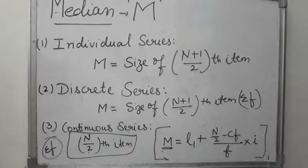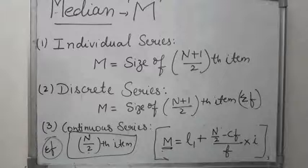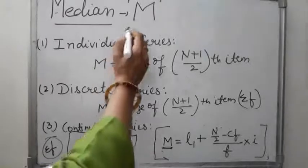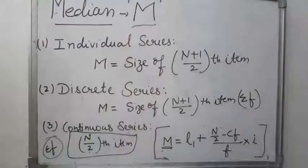Median means half of the values or items of the series are above it and the other half below it. So we can call it the mid value of the series. In statistics, median is indicated by capital M. In order to locate the median value, all items of the series are arranged in either ascending order or in descending order.